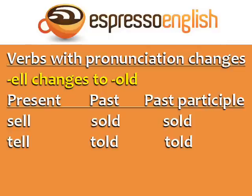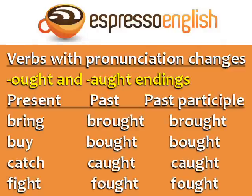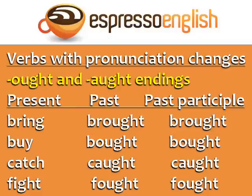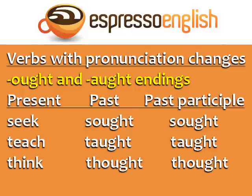Two very common verbs, sell and tell, become sold and told in the past and past participle. Finally, we have the verbs with OUGHT endings in the past and past participle. This can be spelled OUGHT or AUGHT, but the pronunciation is the same: bring, brought, brought; buy, bought, bought; catch, caught, caught; fight, fought, fought; seek, sought, sought; teach, taught, taught; think, thought, thought. Remember that the G is silent in these verbs.